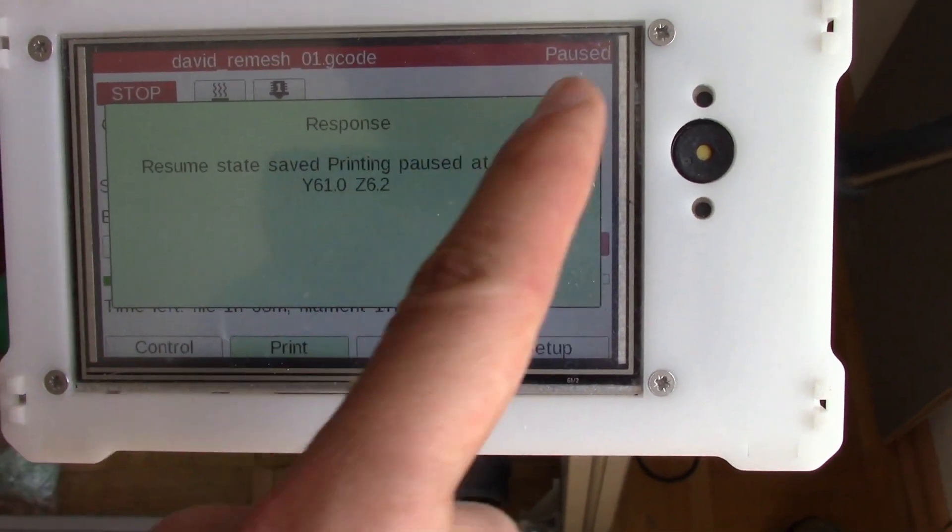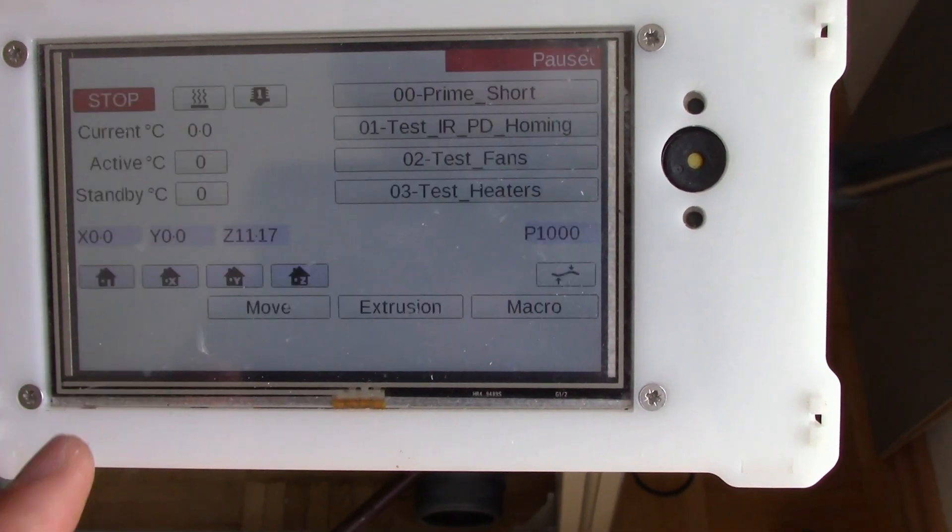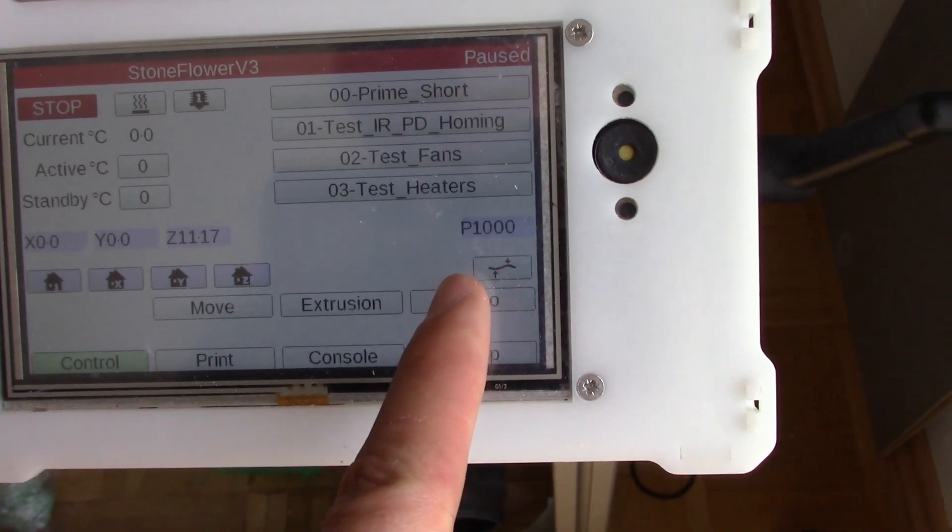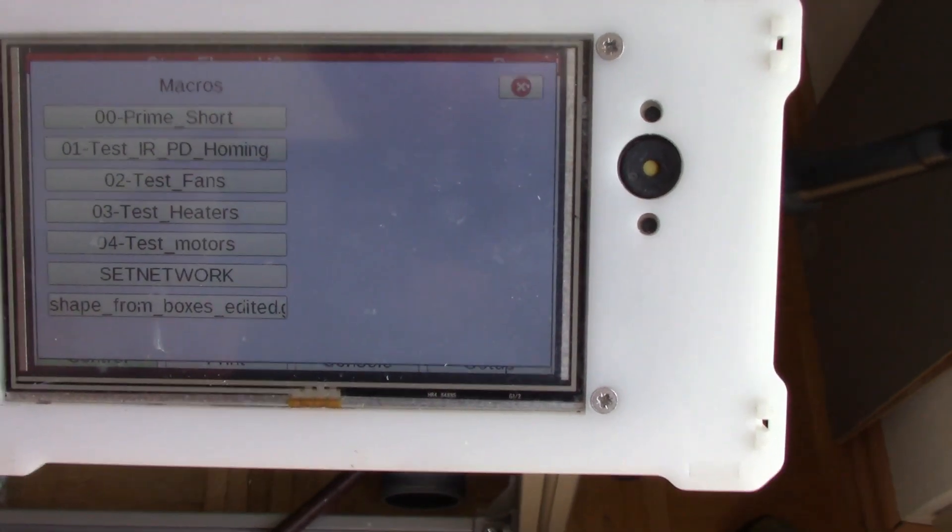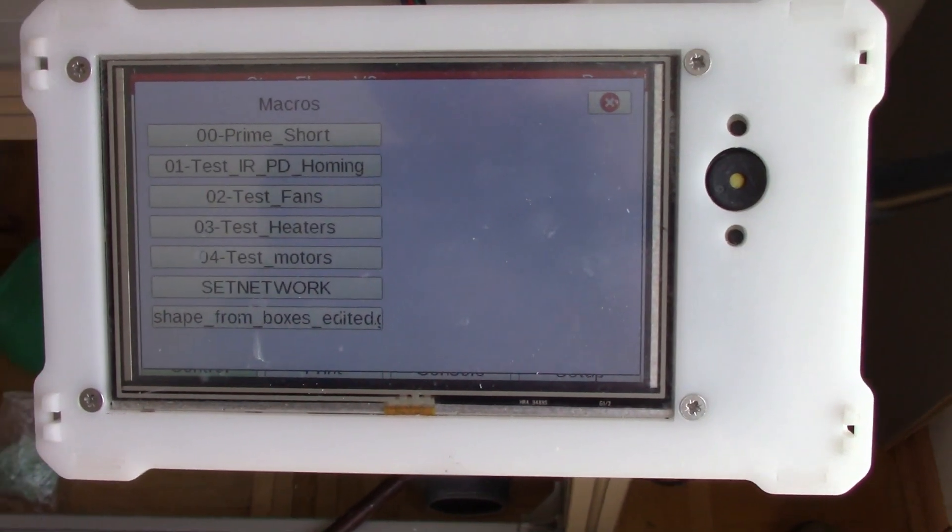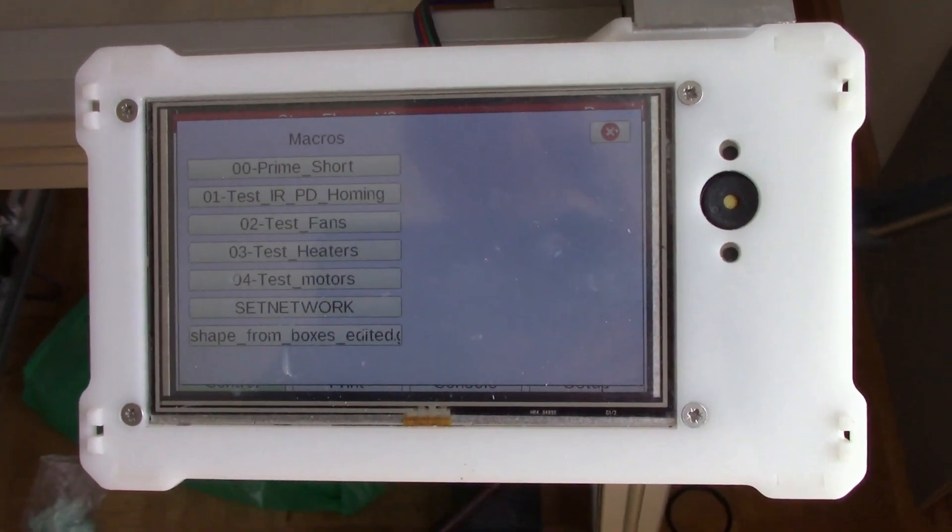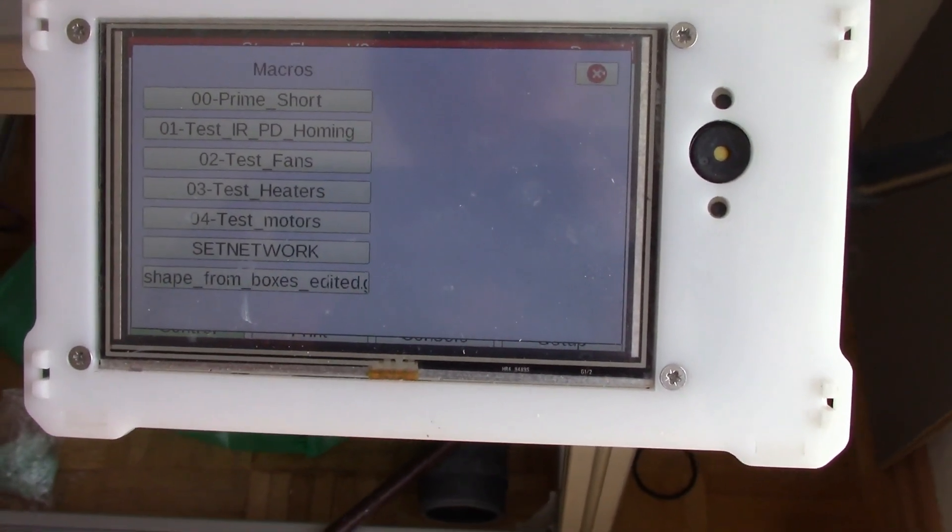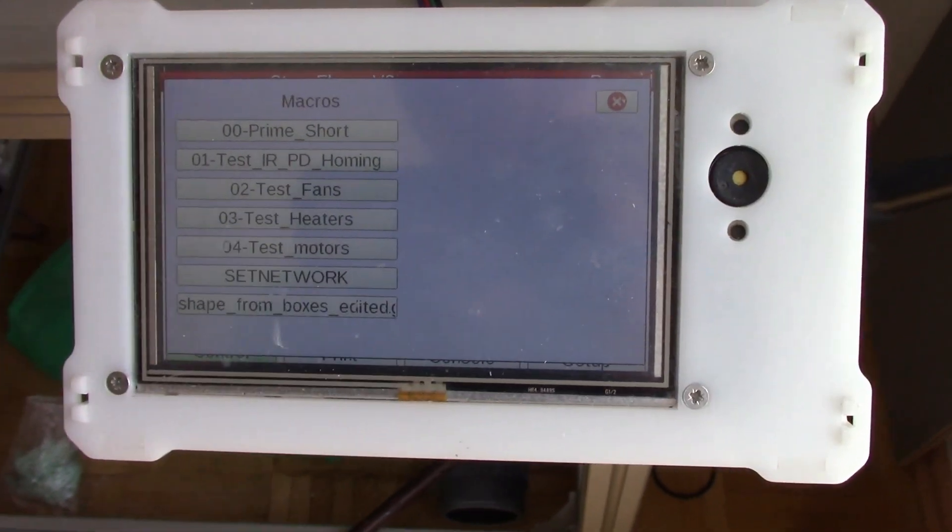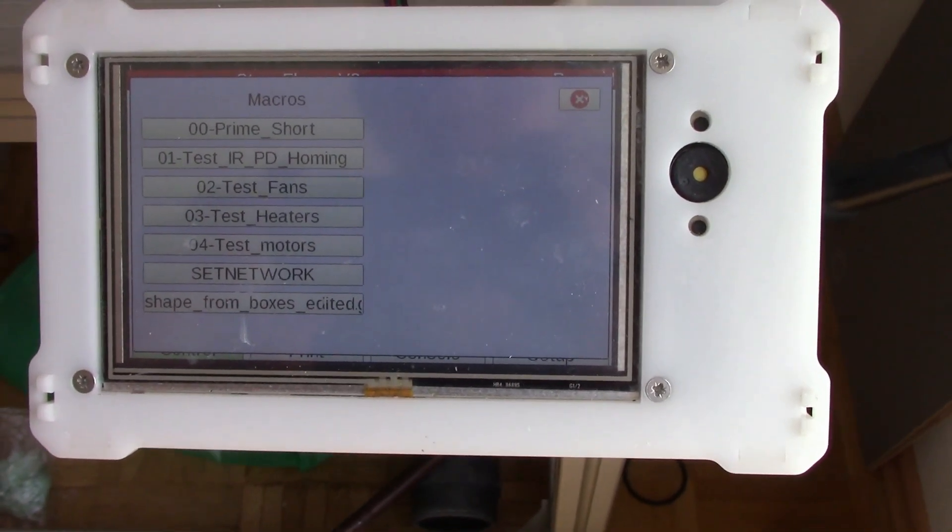Go to the control panel and navigate to the macro section. Macro is a special directory where you can store your own G-codes and launch them while your main printing task is paused.